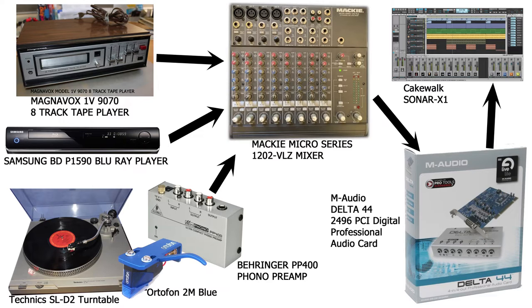Let's take a look at the hardware and software I use to record the different media files of the song Bluebird. First, 8-track tape was played on a Magnavox 1V9070 8-track tape player. The HDCD was played on a Samsung BDP-1590 Blu-ray player. And the two vinyl records were played on a Techniques SL-D2 turntable with an Ortofon 2M Blue cartridge and stylus, and that signal was sent through a Behringer PP-400 phono preamp.